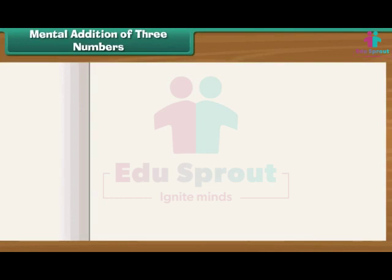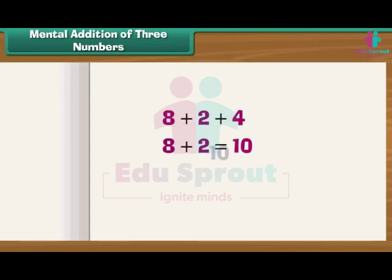Mental addition of three numbers — let us now learn to add three numbers mentally. To add three numbers, we add two numbers first and then the third. We make sure that the two numbers we add first make 10 or a number that ends with 0, as this speeds up our addition.